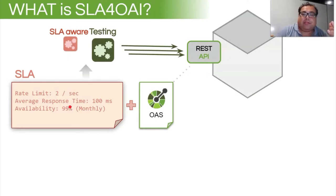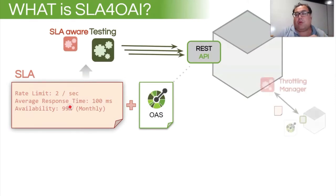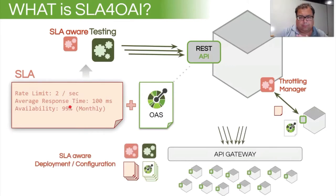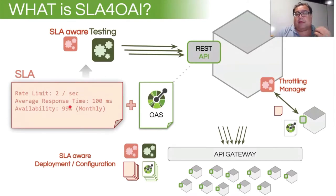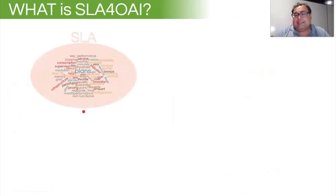We believe that this kind of information, if we can structurally put it into a document, we could generate a new ecosystem or improve the existing ecosystem of tools with very interesting possibilities — like SLA-aware testing that can check if a given rate limit is followed or not, or automatically configuring throttling for an API based on its rate limit. If you have an API gateway, the configuration and deployment of these kinds of tools could be very automated with this structured information.